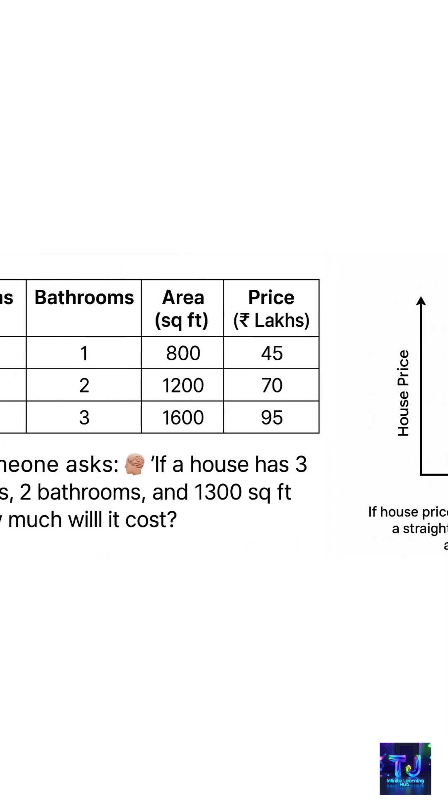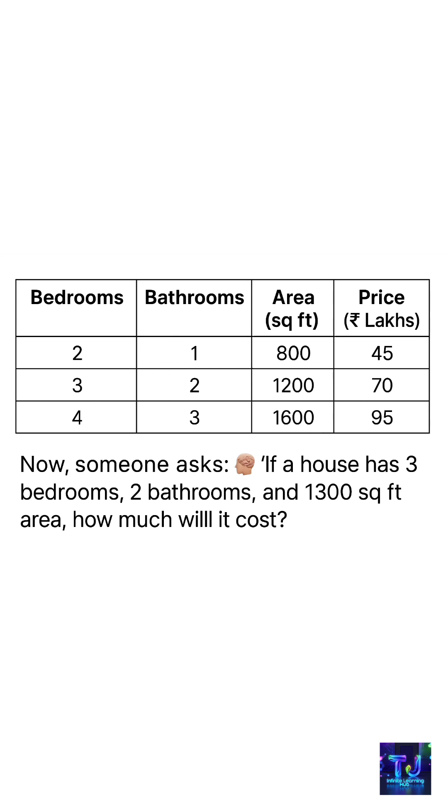Now let's see how regression is used to predict house price. In this image you can see if we have two bedrooms, one bathroom, and 800 square feet, it costs 45 lakhs. Likewise, three bedrooms, two bathrooms, and 1200 square feet costs 70 lakhs.